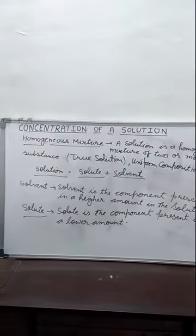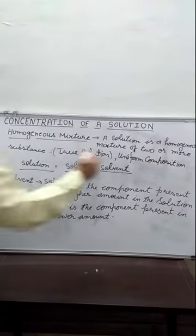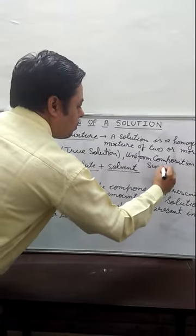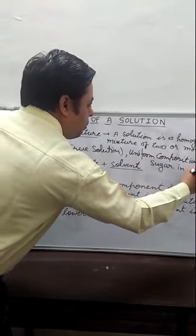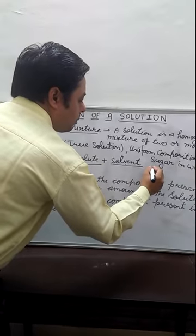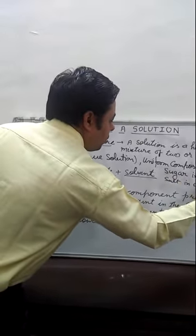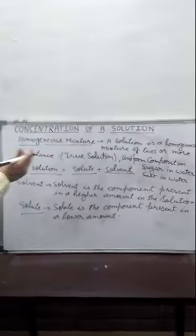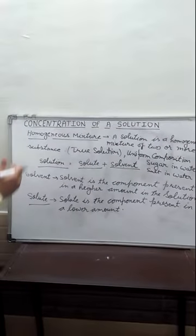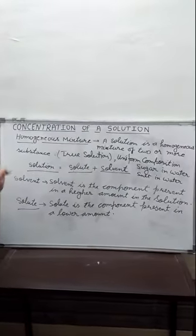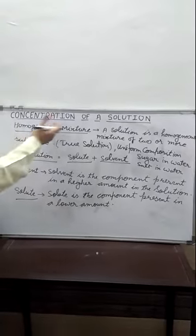For example, homogeneous mixtures include sugar in water and salt in water. If we add sugar in water or salt in water, then it will be a homogeneous mixture.